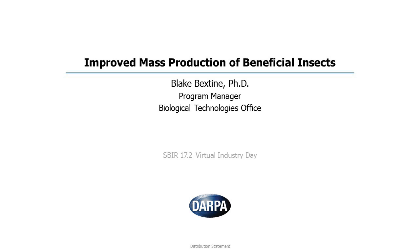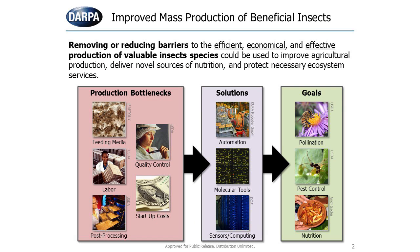We're interested in improving mass production of beneficial insects to aid in our pursuit of achieving agricultural biosecurity. Insects can cause problems in agronomic systems, but they can also provide many benefits. To do studies that involve insects, you oftentimes need a lot of them to be able to do the research studies you need or provide the products that you're looking for.